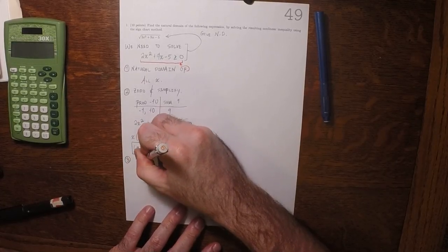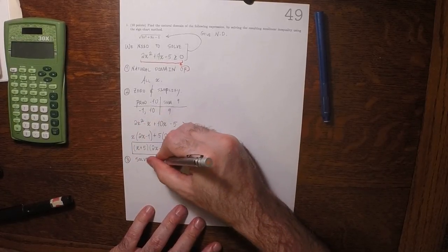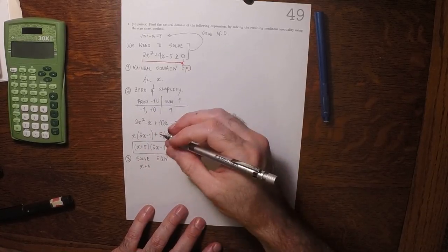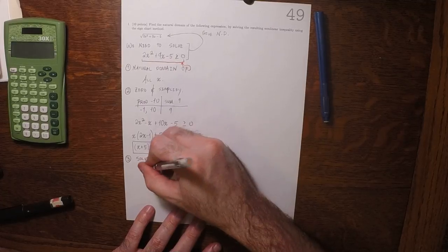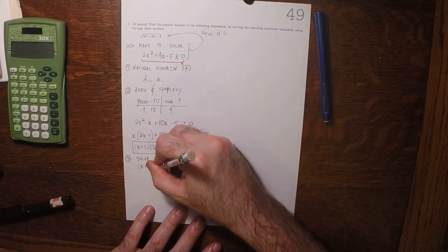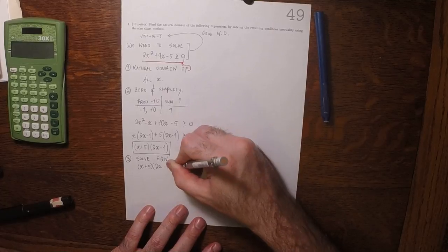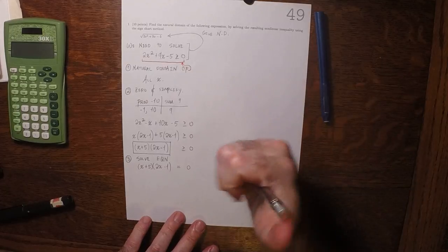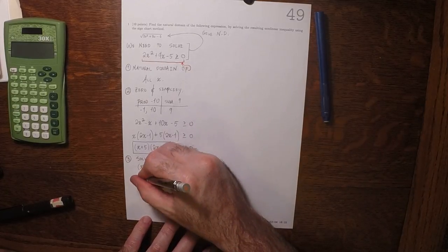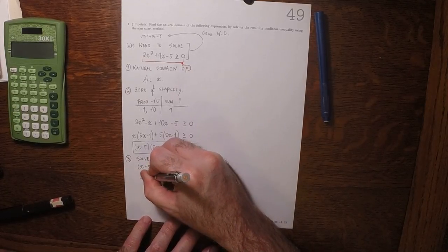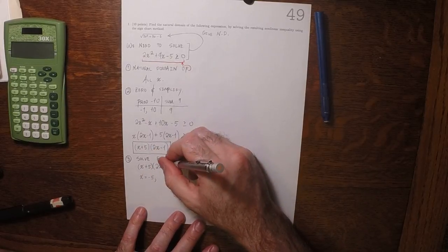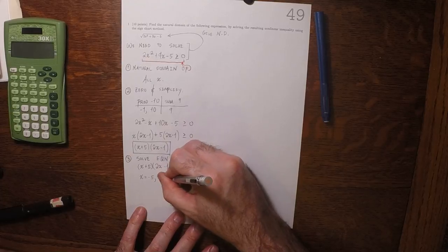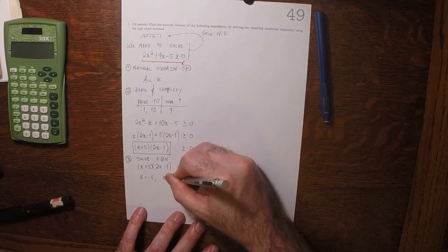Now we're going to solve an equation. So we're going to solve x plus 5 multiplied by 2x minus 1 equal to 0. Because we did all the hard work up here, this one is pretty straightforward now. So the solution is negative 5 or x is half.